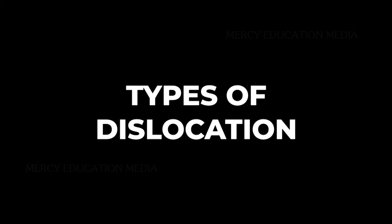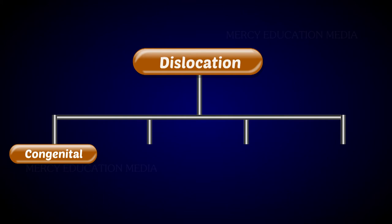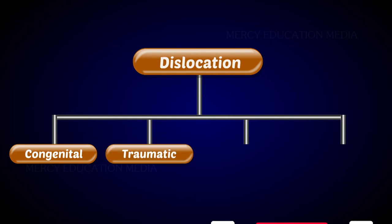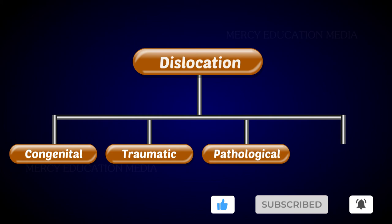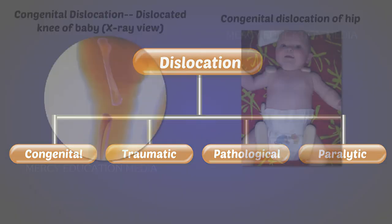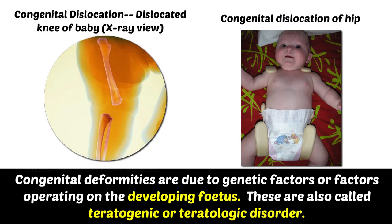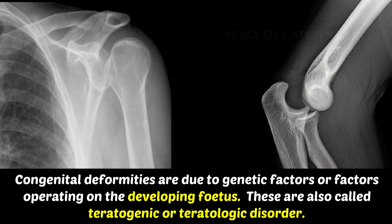The dislocation comprises of congenital, traumatic, pathological, and paralytic factors. Congenital deformities are due to genetic factors or factors operating on the developing fetus. These are also called teratogenic or teratologic disorders.